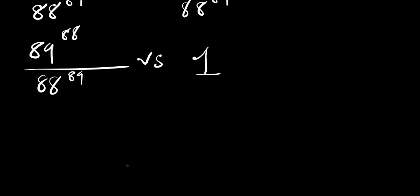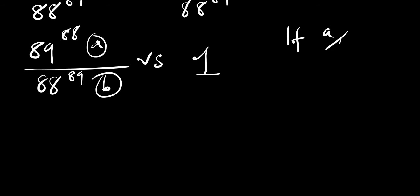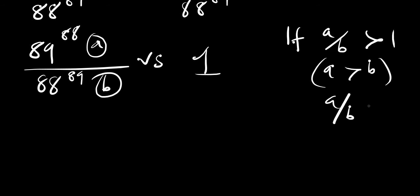What this means is: let a be the first number (the numerator) and b be the denominator. If a divided by b gives a number greater than 1, then a is greater than b. If a divided by b gives a number less than 1, then a is less than b. This is how we are going to compare.